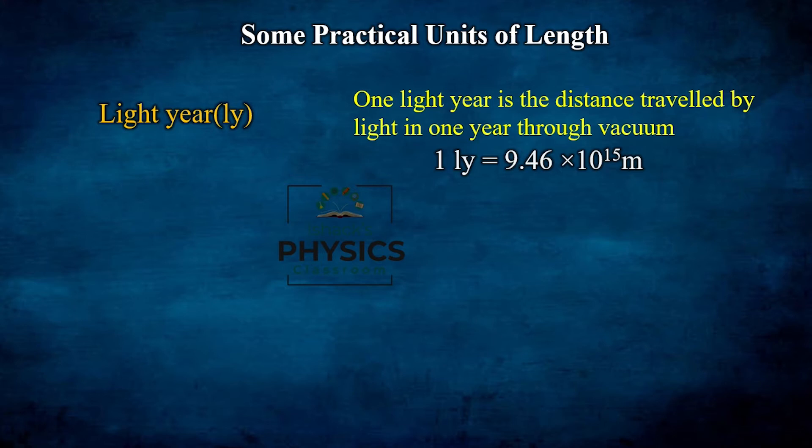One light year is equal to 9.46 × 10¹⁵ meters. That is 9 followed by 15 zeros — a very large value. This is the value of one light year.